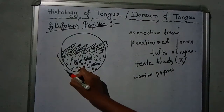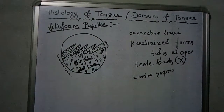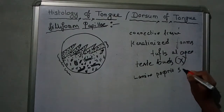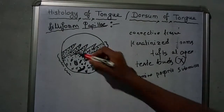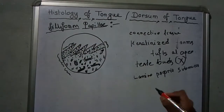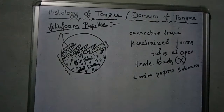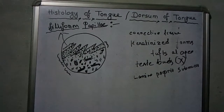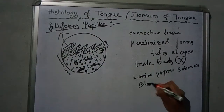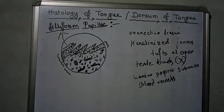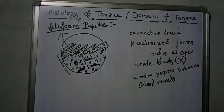This area is called the lamina submucosa. Number four indicates the filiform papillae. There is also the stratum corneum, stratum intermedium, and stratum basale. These areas also contain blood vessels.